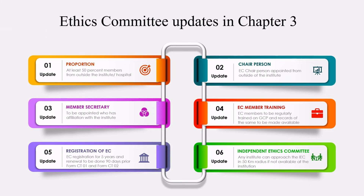Lastly, regarding the independent ethics committee — if your particular institute does not have an ethics committee, then you can approach any ethics committee within a 50-kilometer radius wherever ECs are available. This is because the number of ethics committees is quite limited, so if a sponsor wants to conduct a clinical trial, availability of the ethics committee can be addressed within the 50-kilometer radius. These are critical highlights for the ethics committee in the NDCT Rules 2019.